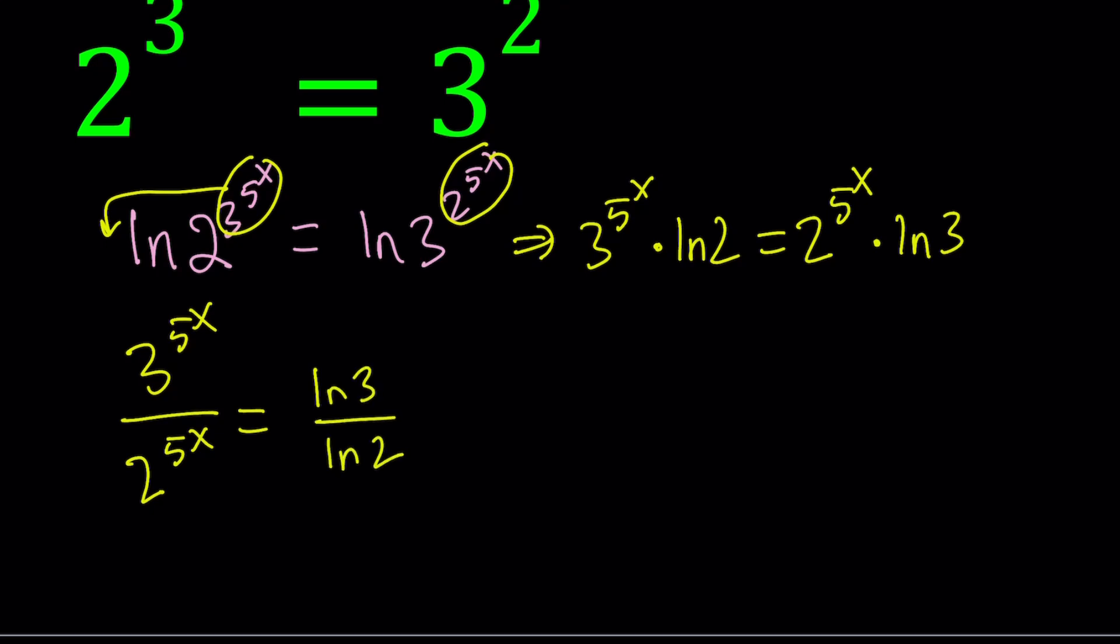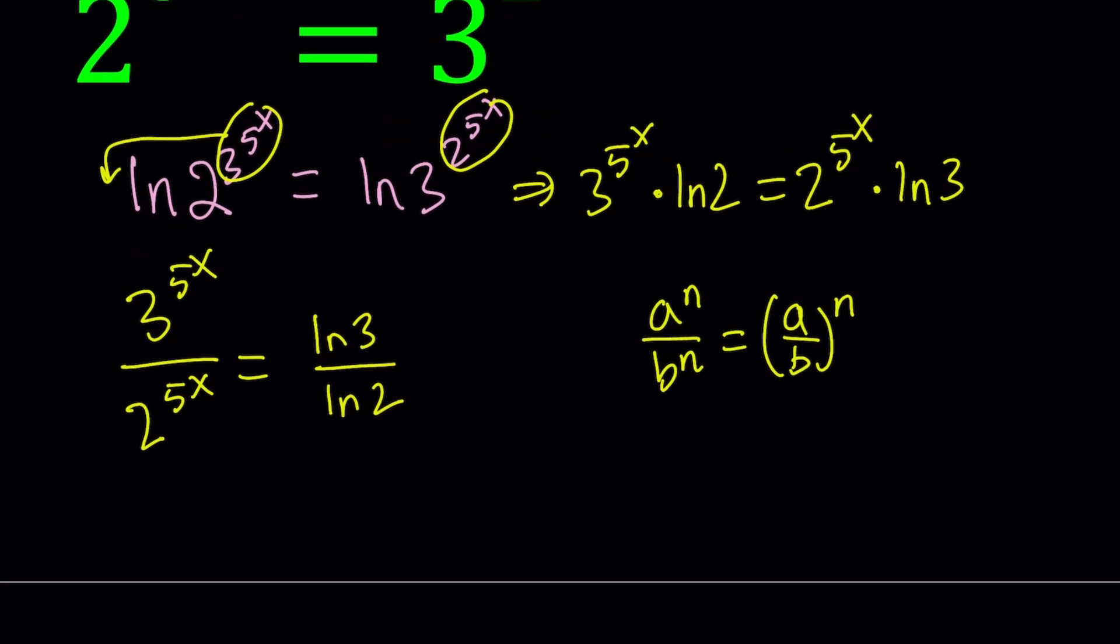Now we're going to use a property of exponents. If you have a to the n divided by b to the n, you can write it as a over b to the n. Obviously, n doesn't have to be an integer here. It can be any real number.